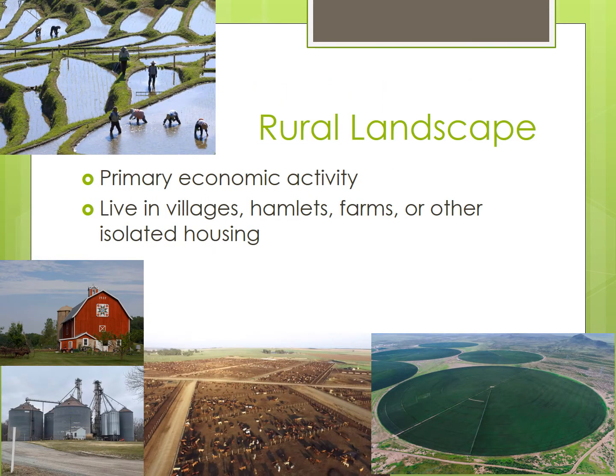A rural area is located outside of an urban area such as a town or city. Rural areas tend to be associated with the primary sector — farming, mining, forestry, and things like that. About one third of the earth's surface is devoted to these types of activities.